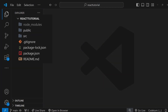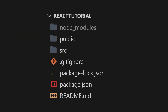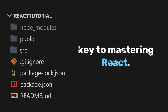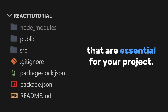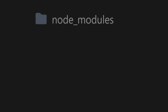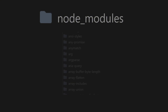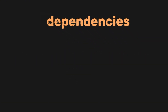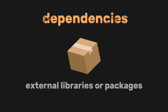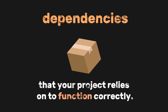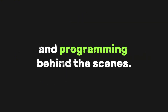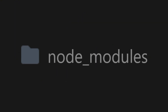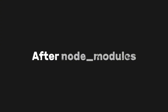Once your app is set up, you'll notice a well-organized folder structure. Understanding this layout is key to mastering React. On the root directory, it contains configuration files and folders that are essential for your project. First, we have the node_modules directory. This directory contains all the dependencies and sub-dependencies required by your project. Dependencies are external libraries or packages that your project relies on to function correctly — React needs a lot of commands and programming behind the scenes, and node_modules handles all of that.